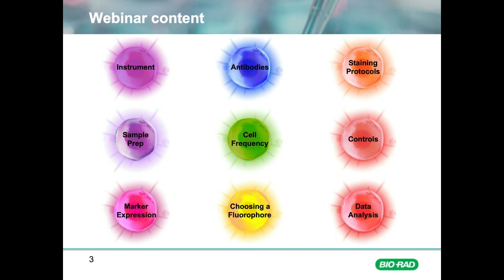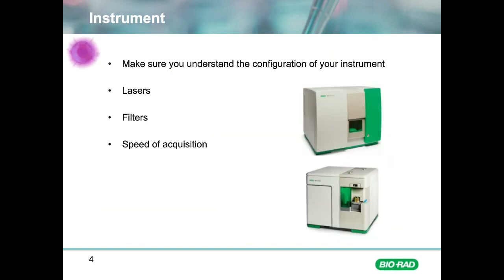Let's start with the instrument. Before you start, you need to know how many lasers and which filters you have available. Cytometers have from one to five or even more lasers, which determine which fluorophores and how many you can use. The filters are equally important, as using an incorrect filter for your fluorophore will mean you get no or sub-optimal data, or data that cannot be properly analysed.